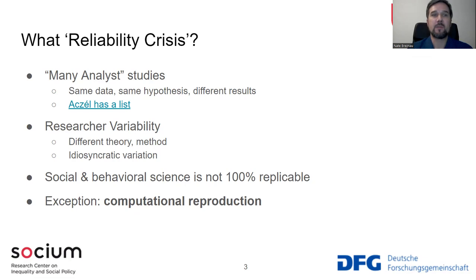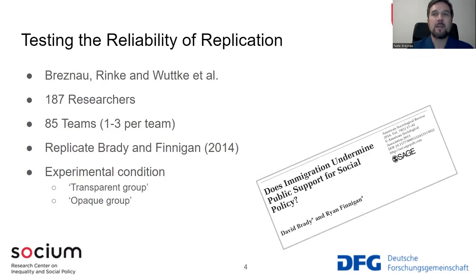Social and behavioral science is not 100% replicable, nor should we expect it to be. However, there is one exception: the computational reproduction. In a computational reproduction, one tries to take the same code and reproduce the exact results from a study using the exact same data.